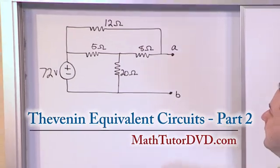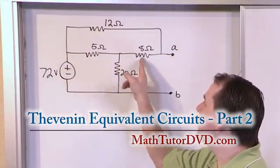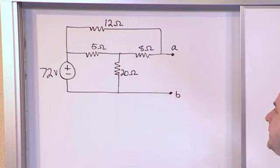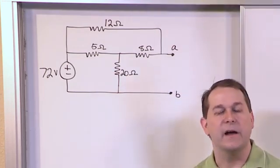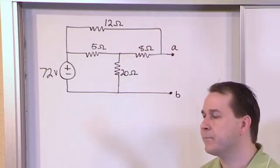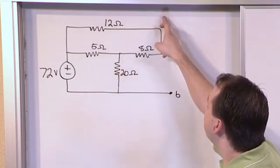So we have a circuit, 72 volt source, lots of different types of values of resistances, and we have two terminals that we've labeled A and B. And the question is very simply, find the Thevenin equivalent circuit relative to terminals A and B.